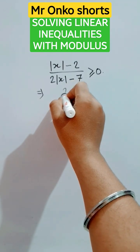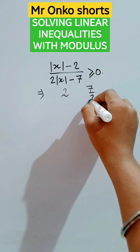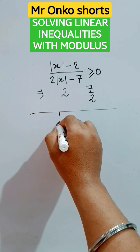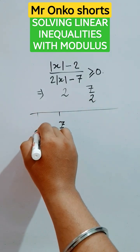Let's find the critical points first. It is 2 and 7 by 2. So let's draw the number line. That is 7 by 2 and here it is 2.